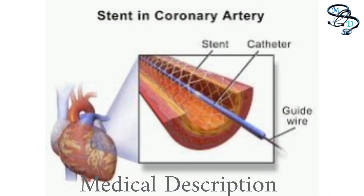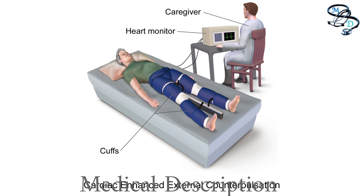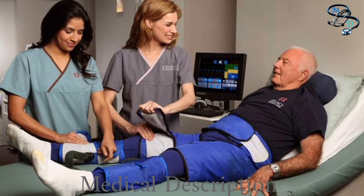Angioplasty and stenting carry some risks, including the risk of blockage reforming — a stent coated with medication can help prevent this. Enhanced external counterpulsation (EECP) therapy might be recommended for people whose angina doesn't improve with other treatments. Large cuffs are wrapped around the legs and air pressure causes them to inflate and deflate in time with the heartbeat, typically requiring five one-hour sessions per week for seven weeks.